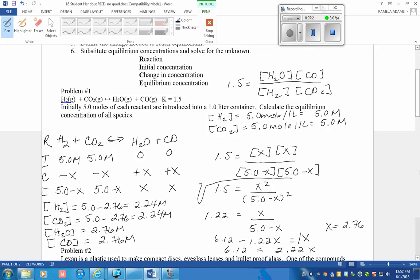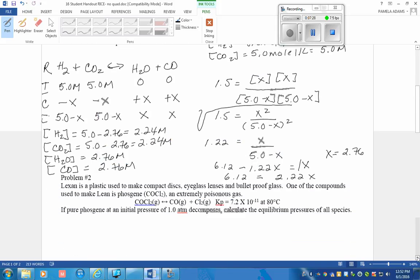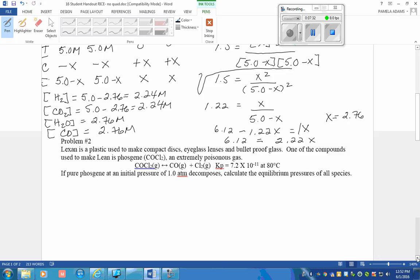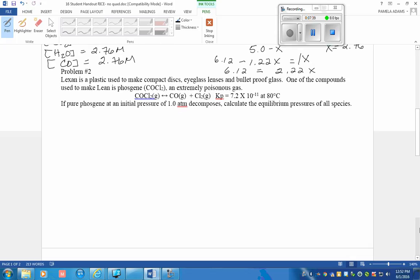Let's look at problem number 2. Lexan is a plastic used to make compact discs, eyeglass lenses, and bulletproof glass. One of the compounds used to make Lexan is phosgene, an extremely poisonous gas. Phosgene will be in equilibrium with carbon monoxide gas and chlorine gas, and it has a Kp of 7.2 times 10 to the negative 11. That means at equilibrium there's a lot more of this than there is of that. The pure phosgene at an initial pressure of one atmosphere decomposes. Calculate the equilibrium pressures of all species.